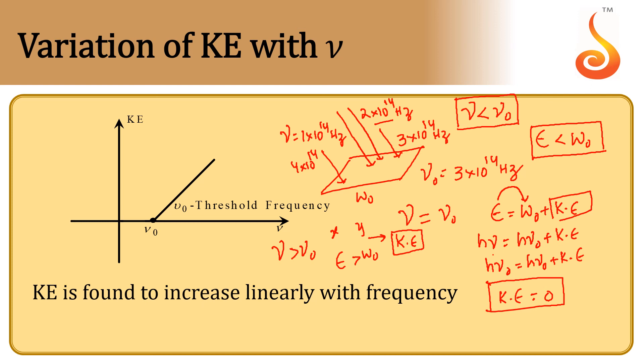That is what is shown in the graph. On the x-axis, frequency is taken, and on the y-axis, kinetic energy is taken. As long as the frequency of light increases but does not reach the threshold frequency, there is no kinetic energy. When the light reaches the threshold frequency, the kinetic energy of the electrons is still 0. But as the frequency of light exceeds the threshold frequency, the kinetic energy increases linearly.